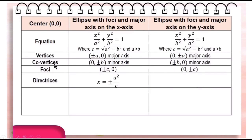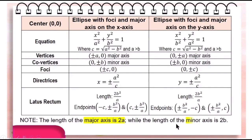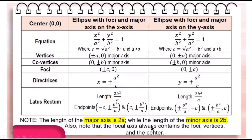The directrices are x equals plus and minus a squared over c if the major axis is the x-axis, and y equals plus and minus a squared over c if the major axis is the y-axis. The length of the latus rectum is 2b squared over a, with endpoints at negative c, plus and minus b squared over a, and positive c, plus and minus b squared over a for major axis on the x-axis. The length of the major axis is 2a, the minor axis is 2b, and the focal distance is 2c. The focal axis always contains the foci, the vertices, and the center.